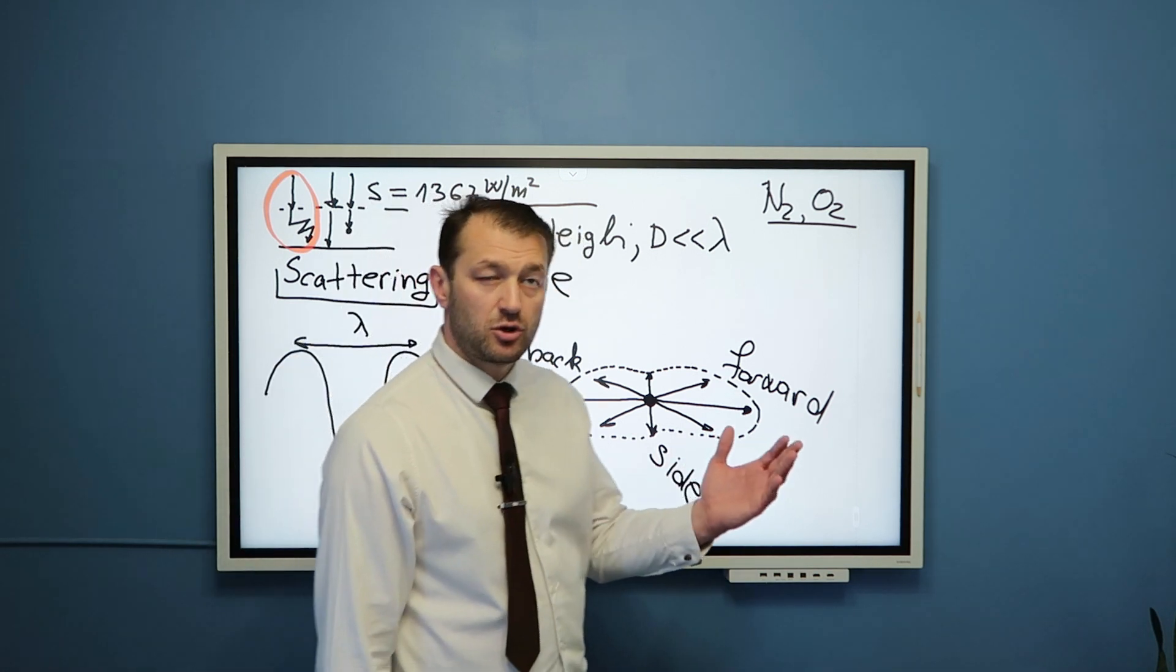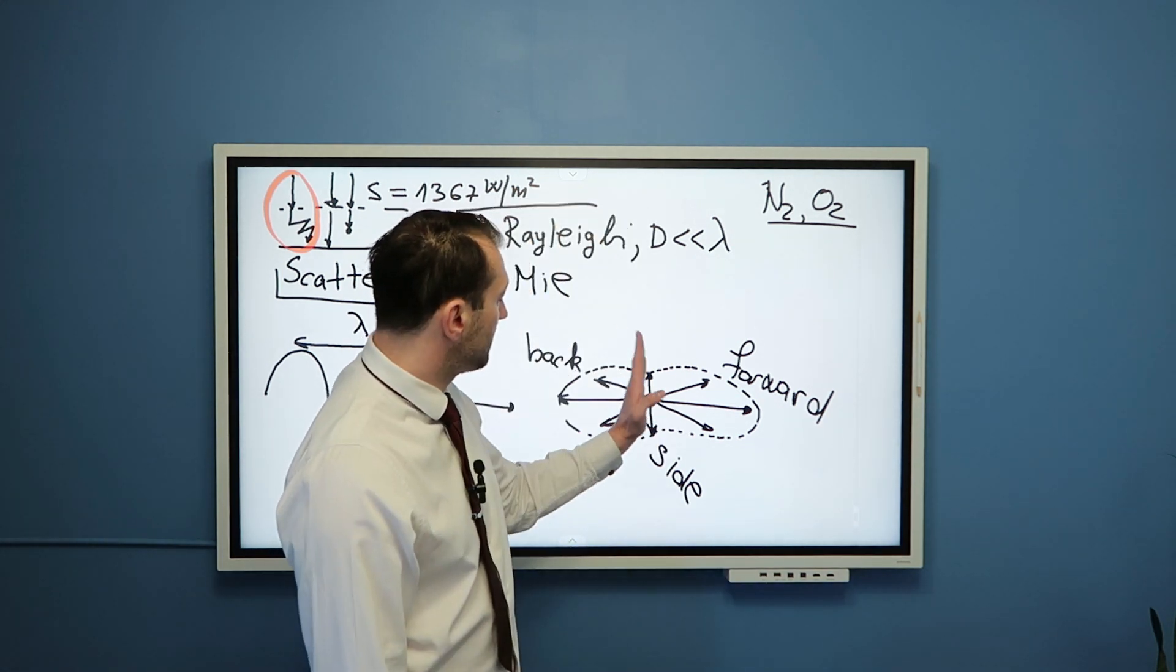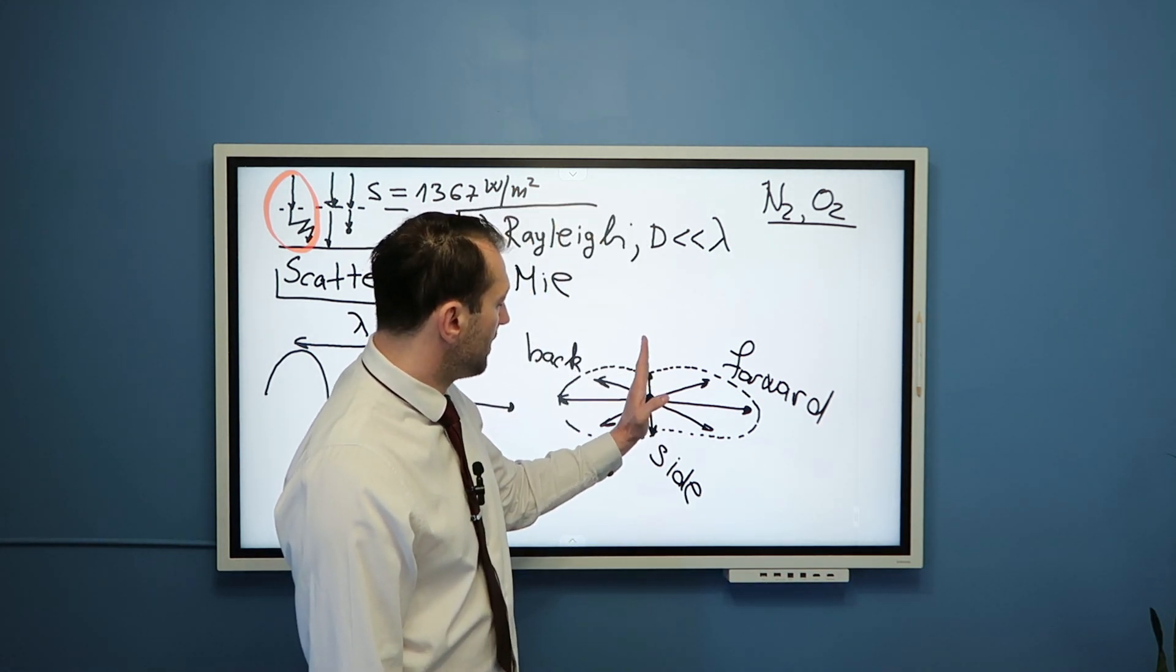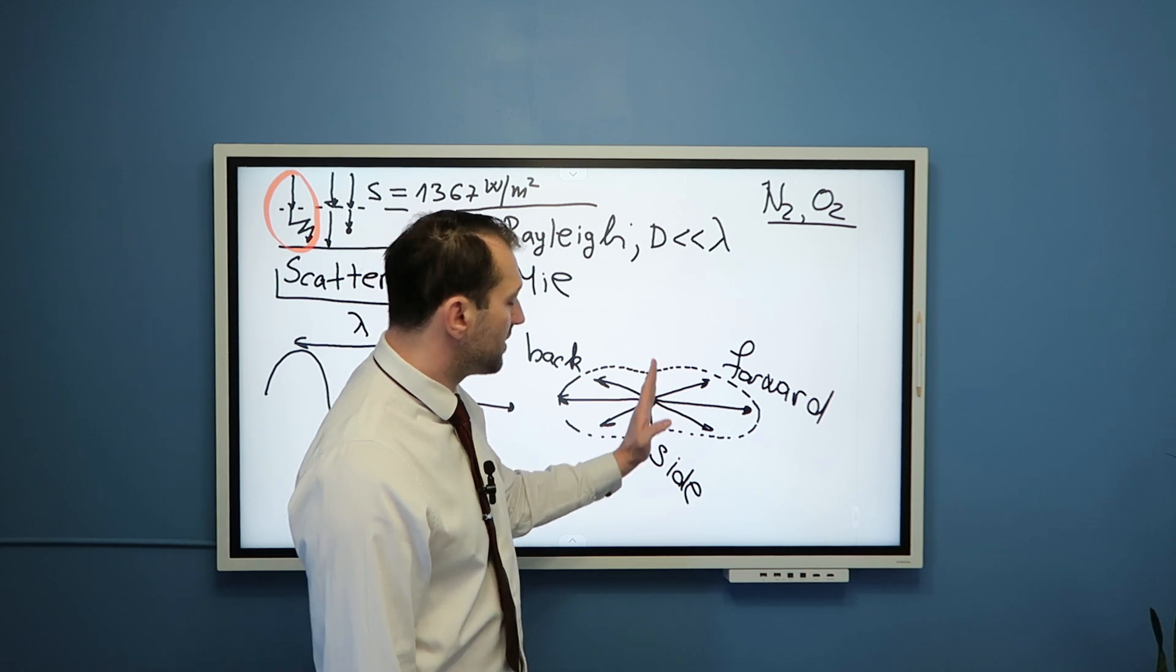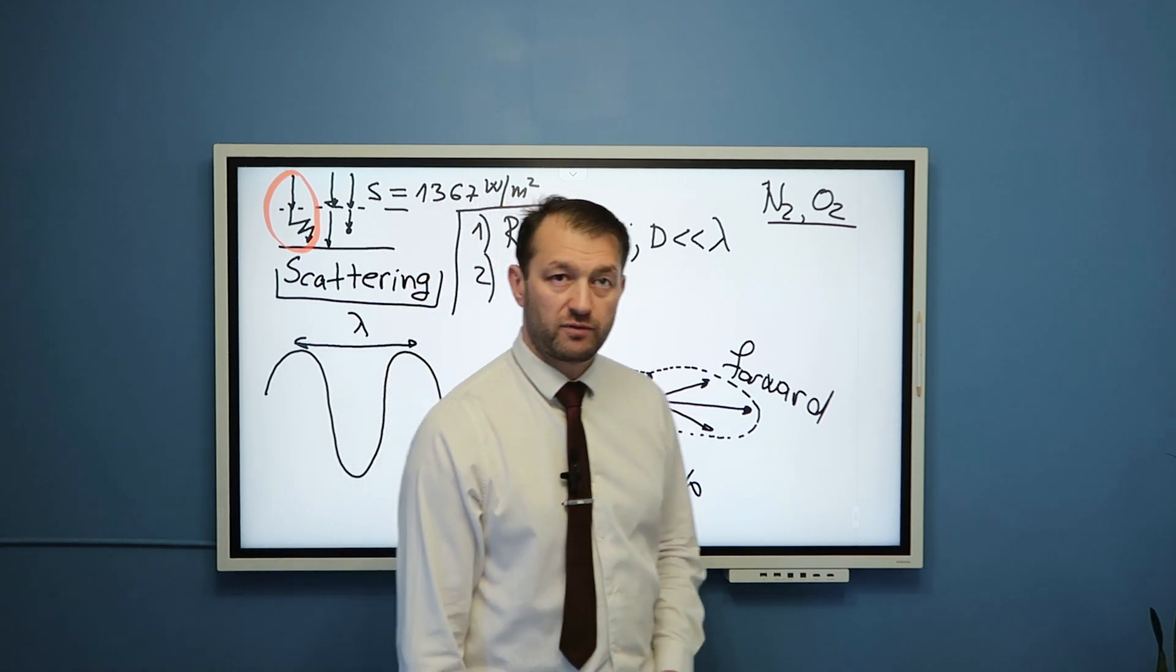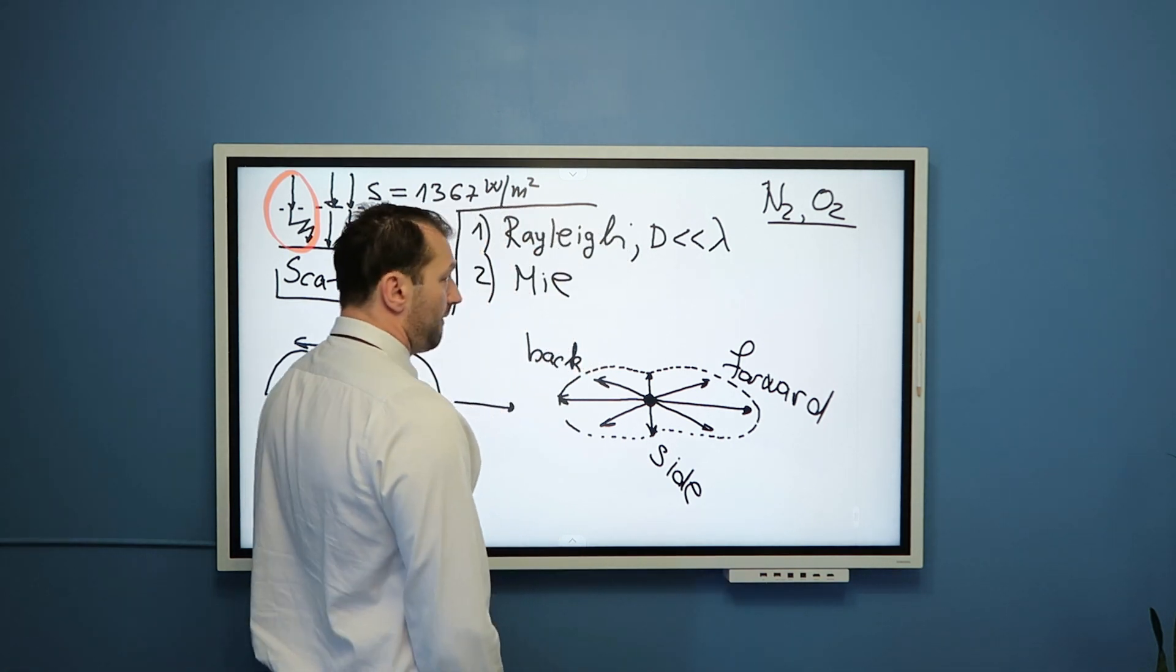And we also have side scattering, which is less likely. It can be demonstrated, although I'm not going to do it in this fundamental playlist, that the side scattering, namely scattering at 90 degree, is half as likely as scattering in the forward direction.